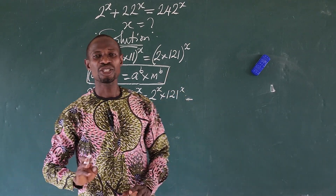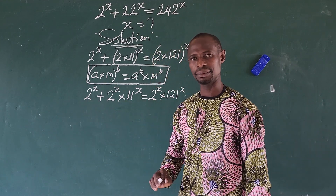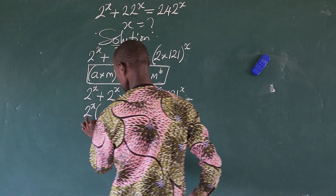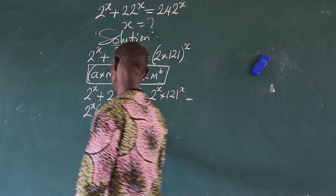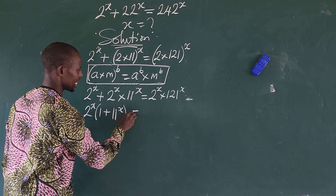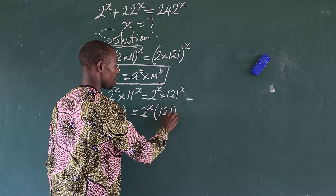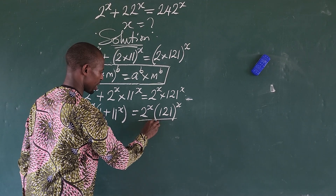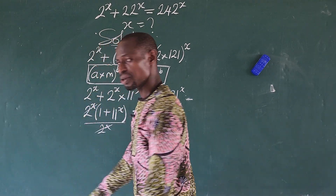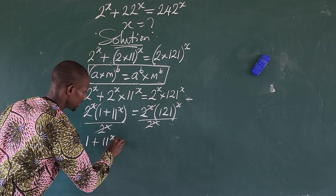We discover that we have 2 to the power of x across the board, so we can factor it out from the left-hand side. This gives us 2 to the power of x times (1 + 11 to the power of x), equal to 2 to the power of x times 121 to the power of x. Dividing both sides by 2 to the power of x, our equation becomes 1 + 11 to the power of x equals 121 to the power of x.